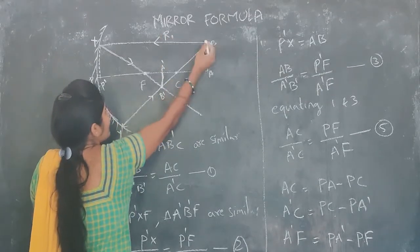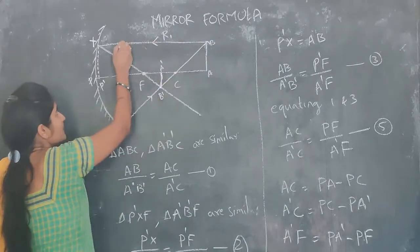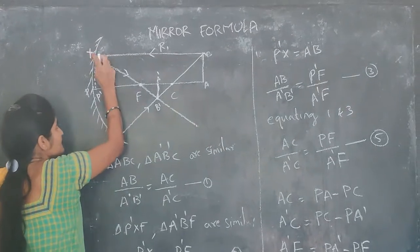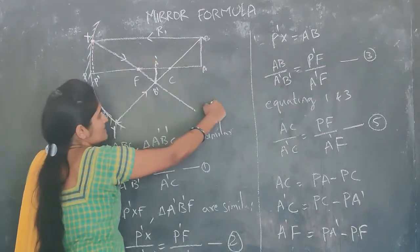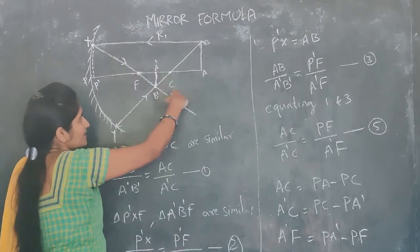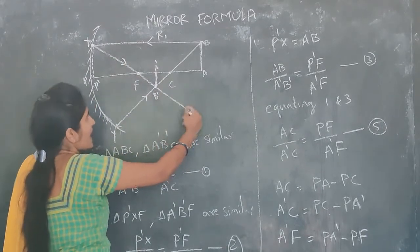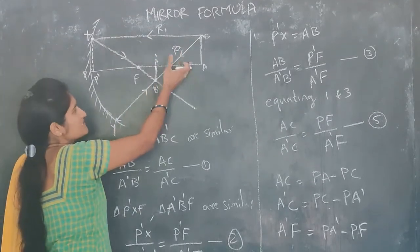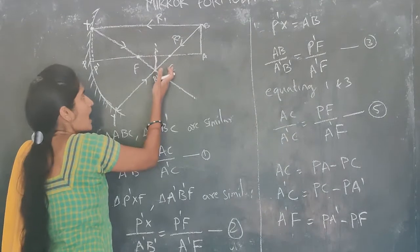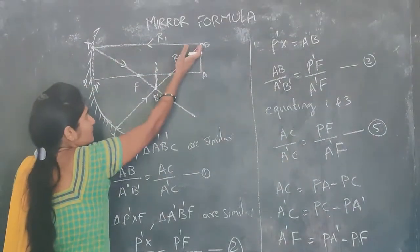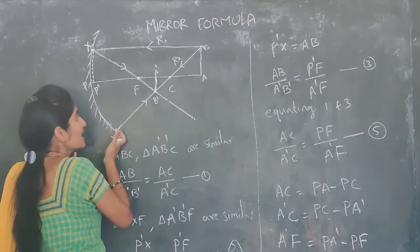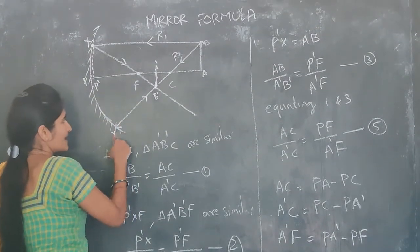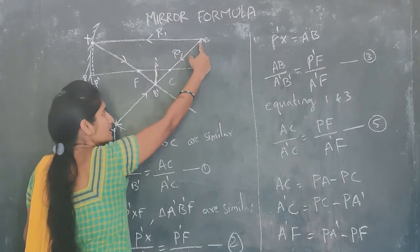I am drawing ray R1, which is a ray travelling parallel to the principal axis. It touches the mirror at X and passes through the focus — the reflected ray passes through the focus. Next, I am considering R3. For simplification I am considering R3, which is passing through the centre. The ray meets the mirror at Y and gets reflected back in the same path.